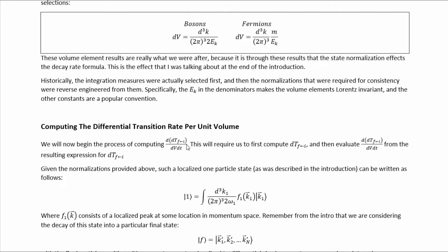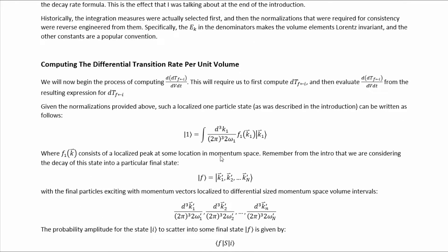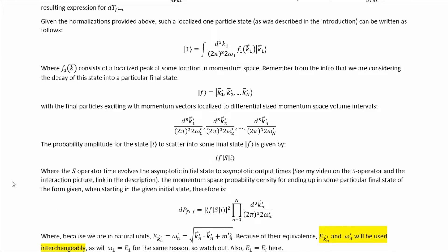We will now begin computing the differential transition probability density. This requires us to first compute the transition probability and then evaluate the derivatives. Given the normalizations provided, a localized one-particle state can be written with F1 consisting of a localized peak at some location in momentum space. The probability amplitude for state I to scatter into some final state F is simply the scattering matrix element, where the S operator time-evolves the asymptotic initial state to the asymptotic output times. The momentum space probability density for ending up in a particular final state is therefore the modulus squared of this amplitude.